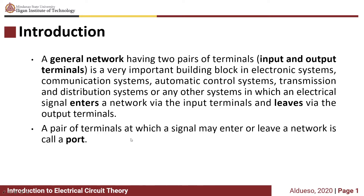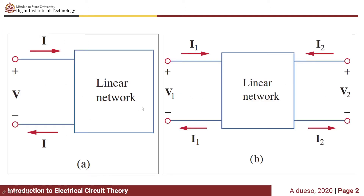A pair of terminals at which a signal may enter or leave a network is called a port. We discussed in Electric Circuit Theory 1 that we can transform a circuit into a network having a single port using the Thevenin or Norton equivalent circuit.